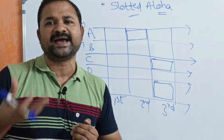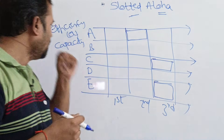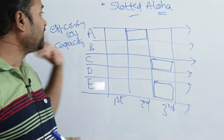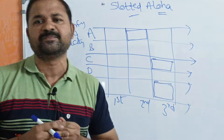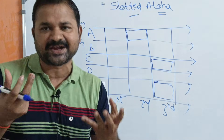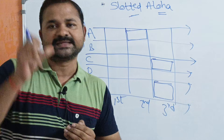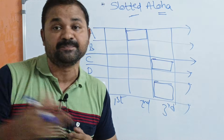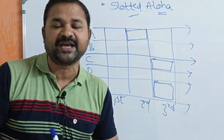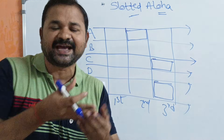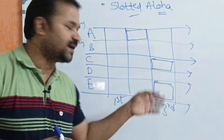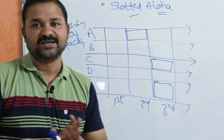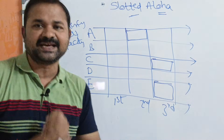If no other user is transmitting during a slot, there is no collision and the frame is successfully received. Whenever a collision occurs, the same frame is retransmitted after a random amount of time, called the backoff time. After the backoff time expires, the users retransmit the same frame once again.